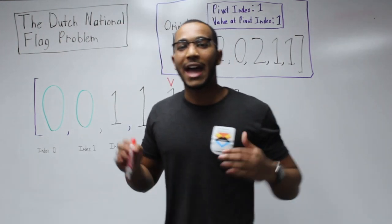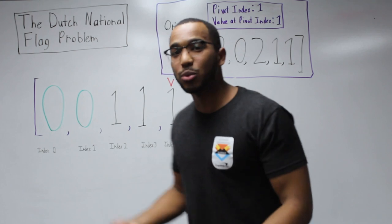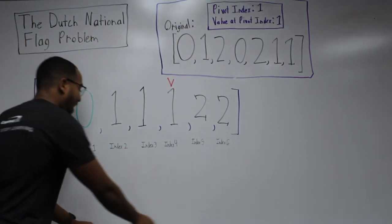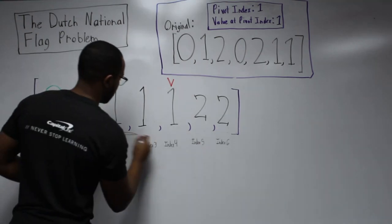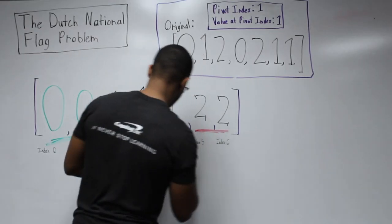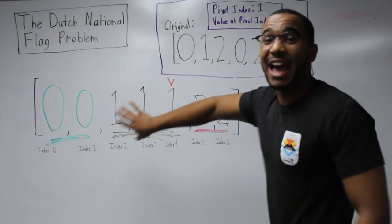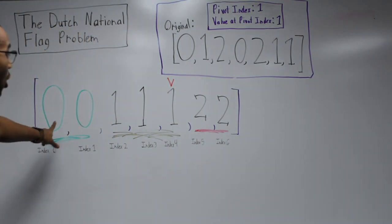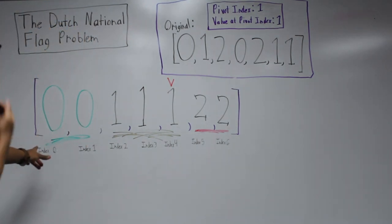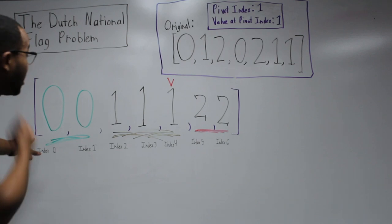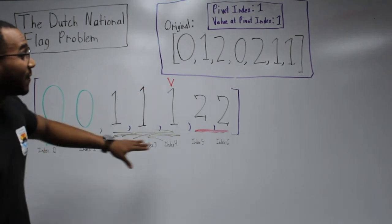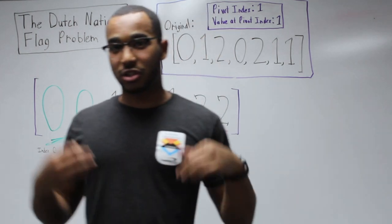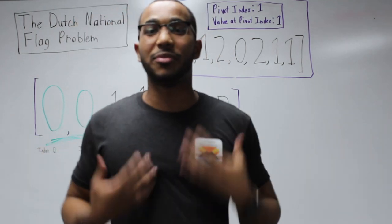We end our backwards iteration and the problem is finished. We have three sections: a region less than our pivot value of one, a region equal to one, and a region greater than one. That's the Dutch national flag.